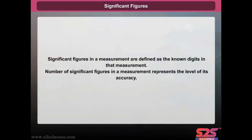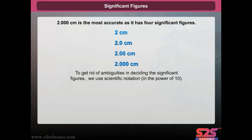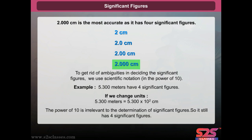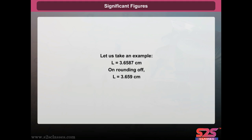Significant figures in a measurement are defined as the known digits in that measurement. The number of significant figures represents the level of accuracy. For example, 2.000 cm is the most accurate as it has four significant figures. To avoid ambiguities, we use scientific notation in powers of 10. For example, 5.300 m has four significant figures; converting to 5.300 × 10² cm, the power of 10 is irrelevant to the count — it still has four significant figures. Rounding off is a process by which the number of significant figures can be reduced: for example, L = 3.6587 cm rounds off to 3.659 cm.